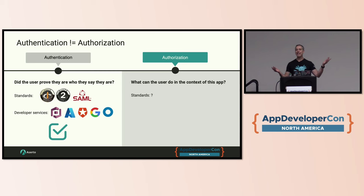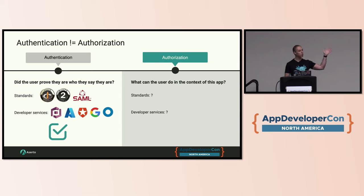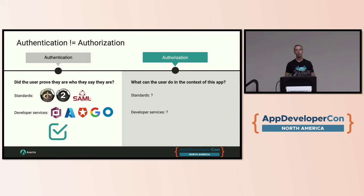So what are the standards for authorization? What's the OpenID Connect for authorization? There's none. A hat tip to a talk I'm giving tomorrow called OpenID AuthZen — the OpenID Connect of authorization. We're trying to go build a standard like OpenID Connect for authorization, but it's still obviously in its infancy. And developer services — what's the Auth0 of authorization? Nobody knows, because there isn't one. There are half a dozen startups like ours, like Acerto, that are trying to build one of those things. But again, it's an early space.